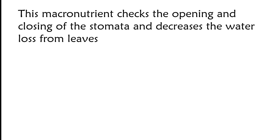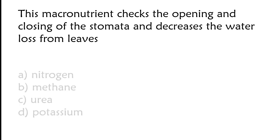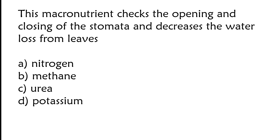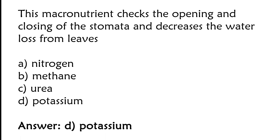This macronutrient checks the opening and closing of stomata and decreases the water loss from leaves. Options: nitrogen, methane, urea, potassium. The correct answer is option D. Potassium macronutrient checks the opening and closing of stomata and decreases the water loss from leaves.